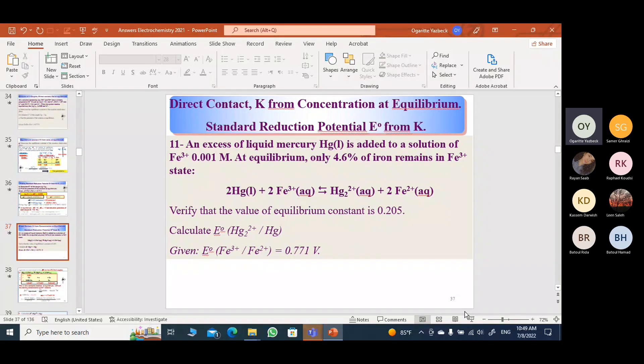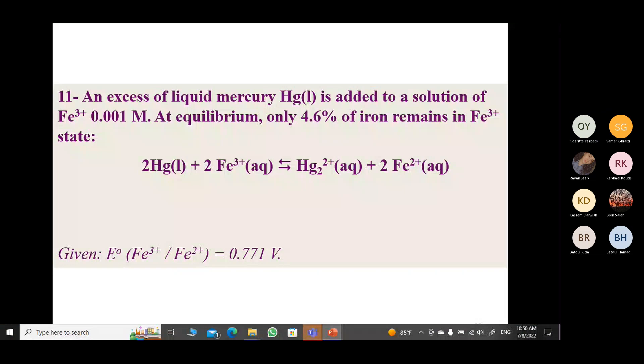Correct, we have number 11. An excess of liquid mercury is added to a solution of Fe³⁺ at 0.001 M. They gave us already the equation between this mercury and the iron, and it looks like they already balanced it for us, so that's good.